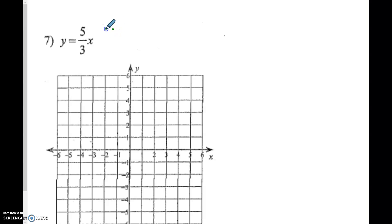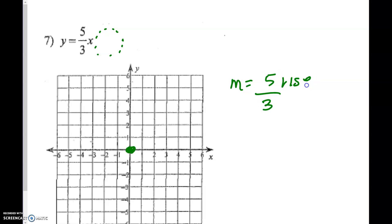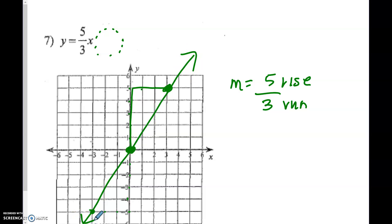Number 7 does not have a number for the y-intercept over here, so this one is going to go through the origin. We still have a slope of 5 over 3, so I rise 5 and run 3. For a third point, I can go down 5 and left 3. All of these points line up, so we have a constant rate of change. And does this one go through 0, 0? Yes — so this one is proportional.